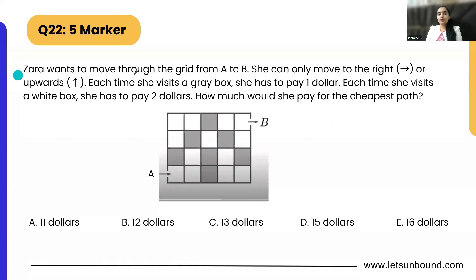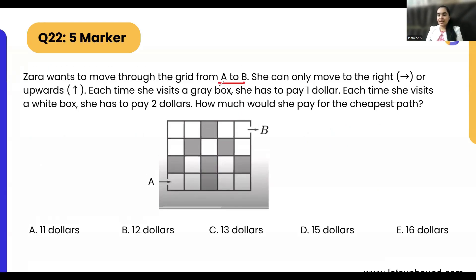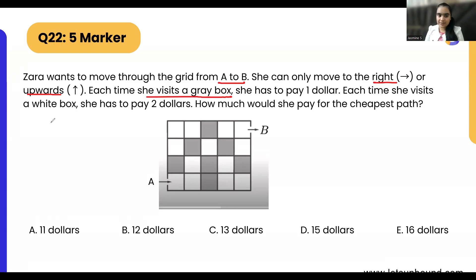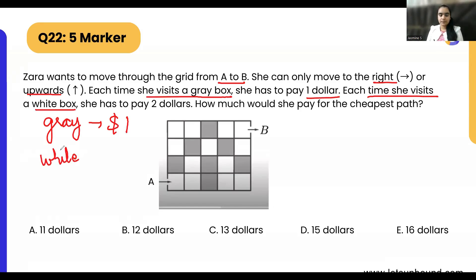Question 22: Zara wants to move through a grid from A to B. She can only move to the right or upwards — not downward or to the left. Each time she visits a gray box she pays one dollar, and each time she visits a white box she pays two dollars. We need to find the cheapest path.